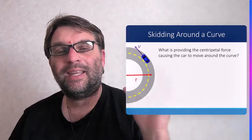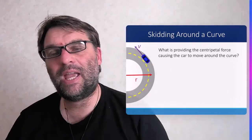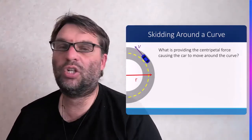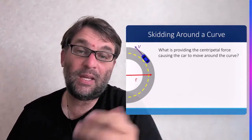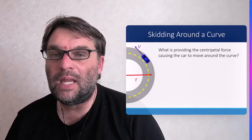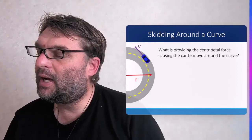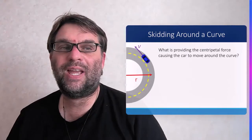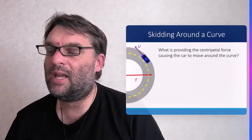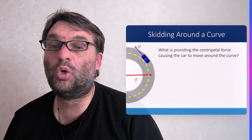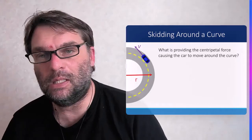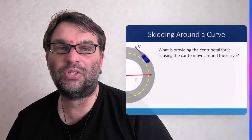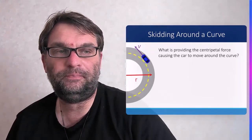There are three cases we look at in Level 3 physics: friction on a flat bend as seen here, banked corners which we'll look at in the next slide, and conical pendulums which we'll look at in the last slide.